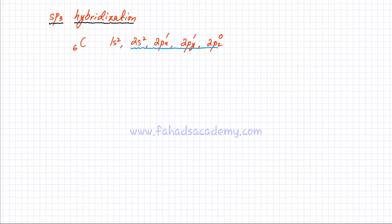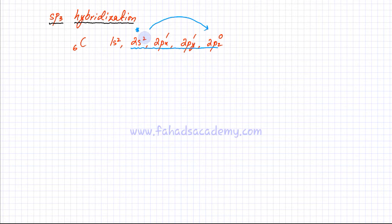When an atom is bonding, electrons get pulled by different atoms in different directions. So the 2s orbital is not going to retain two electrons — one of the electrons would be promoted to the 2Pz orbital. So instead of having two electrons in the 2s orbital, it's going to have just one electron, whereas the 2Pz is going to have one electron. So now carbon has four different orbitals in its outer shell which are going to be involved in bonding.